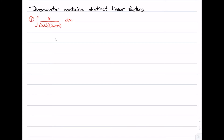The first thing we want to do is write our fraction 5 over (x plus 3)(2x plus 1) as two separate fractions — one with a denominator of x plus 3 and one with a denominator of 2x plus 1. The numerator has to have a degree less than the denominator. Since each denominator is degree 1, the numerators must be constants, so we'll call them a and b.